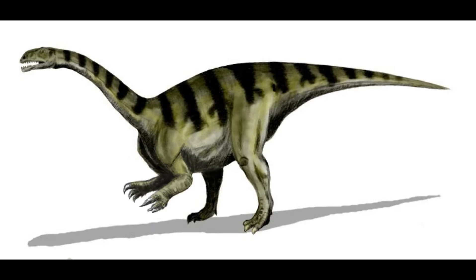Carnivorans — the group including modern carnivores like dogs, cats and bears — also started to evolve into their modern forms. The Eocene epoch was particularly significant for primate evolution. Early primates such as adapiforms and omomyiforms exhibited traits like larger brains and forward-facing eyes, adaptations for improved vision and arboreal life. These early primates laid the groundwork for the later evolution of monkeys, apes and eventually humans.